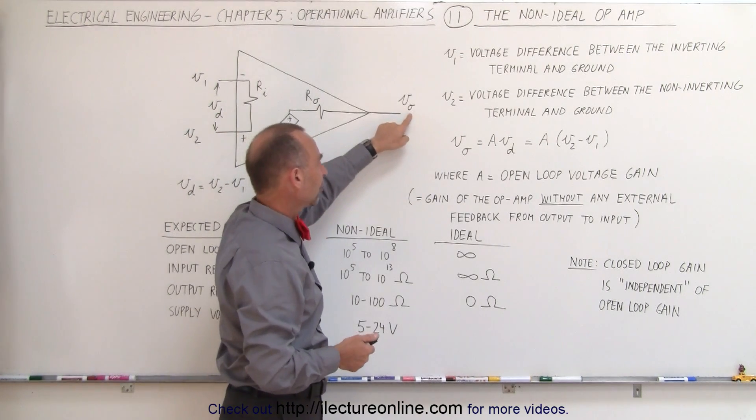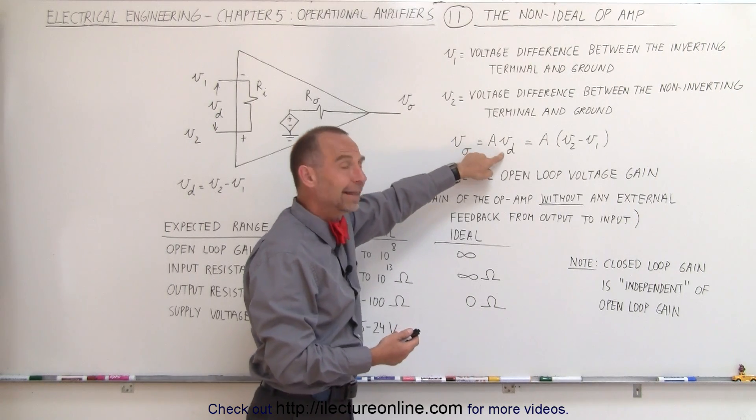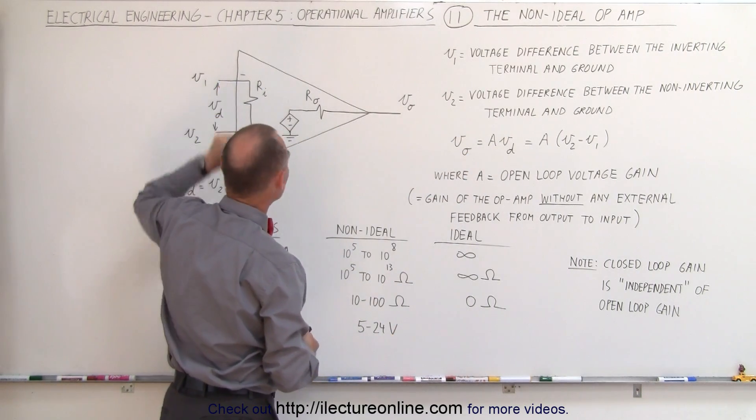You can see then that the voltage output is equal to the gain, A stands for the gain, times the voltage difference, the difference between these two voltages.